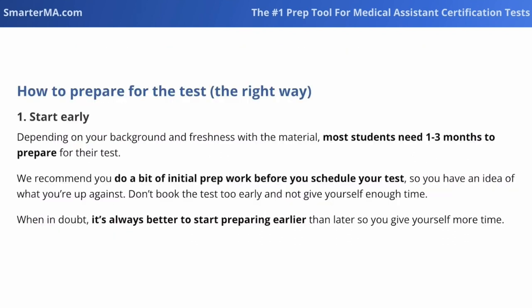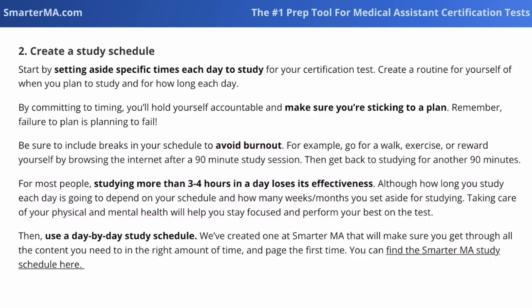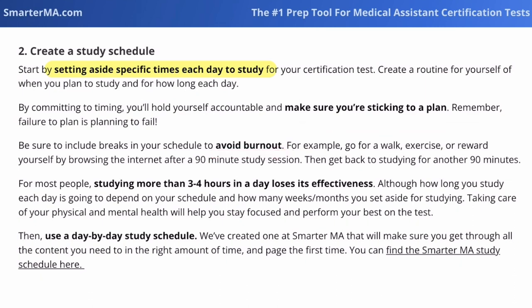To avoid these problems, make sure you start early enough — most people need one to three months to prepare. Do some initial prep work before scheduling your exam so you know what you're up against. Next, create a study schedule by setting aside a specific amount of time each day to study and creating a routine. This holds you accountable. Make sure to avoid burnout by taking breaks, going for a walk, and doing things you enjoy. Studying more than three to four hours in a day loses its effectiveness, and it's important to know yourself — maybe you can only study an hour and a half.